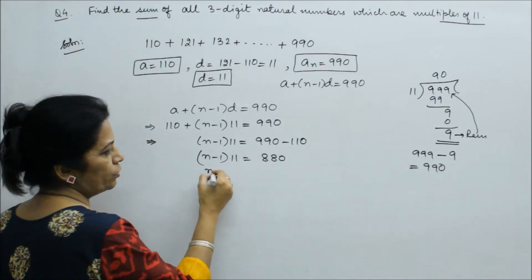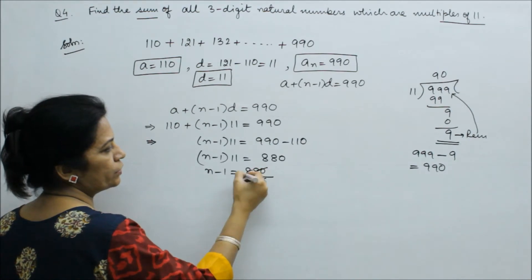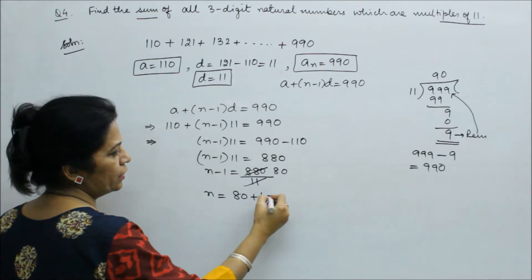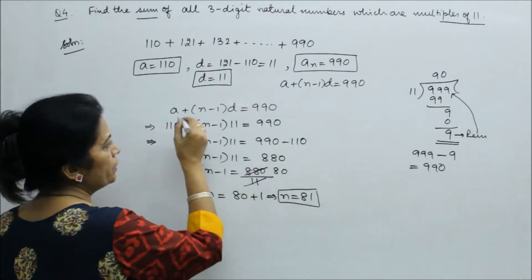So n minus 1 times 11 equals 880. So n minus 1 equals 880 divided by 11. So n equals 80 plus 1.